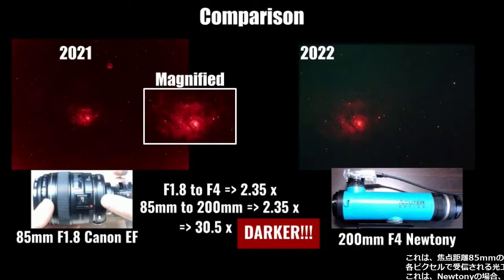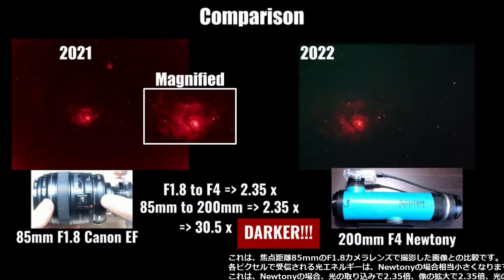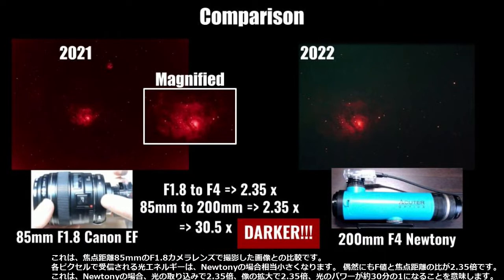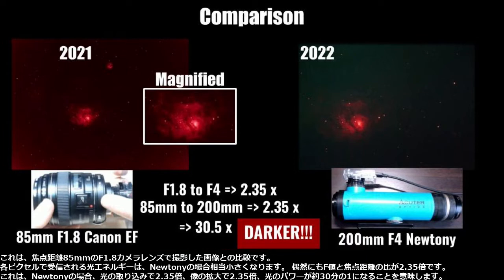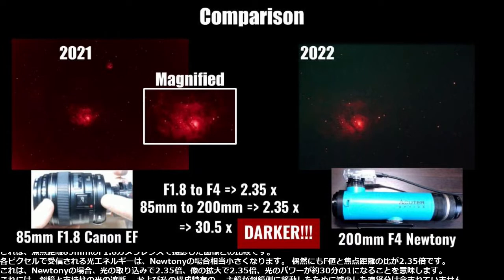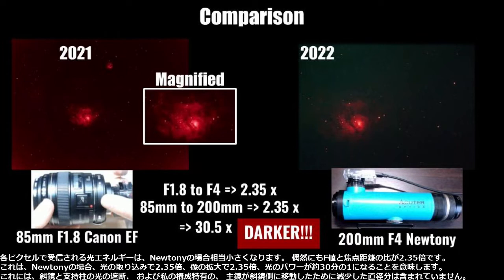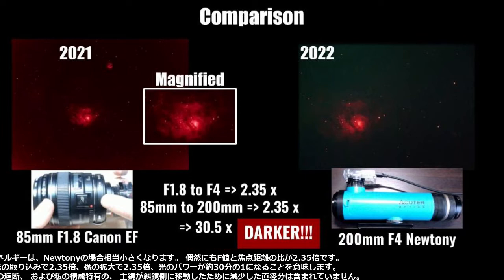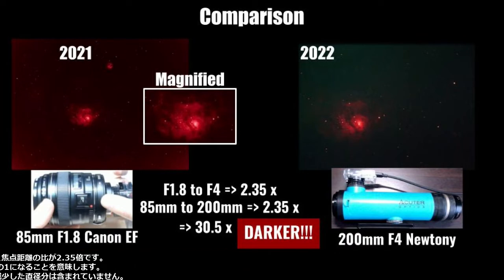This is a comparison to the image taken from an f1.8 camera lens with a focal length of 85mm. The light energy received in each pixel in the Newtonian case is so much lower. It is just a coincidence that the ratio of f-numbers and the focal lengths are 2.35 times. It means 2.35 times in light intake, and 2.35 times in image magnification, producing about 30 times smaller light power in the Newtonian case. This does not even include the light blockage of the secondary mirror and the supporting spokes, as well as the reduced diameter due to the primary mirror being translated closer to the secondary mirror in my configuration.